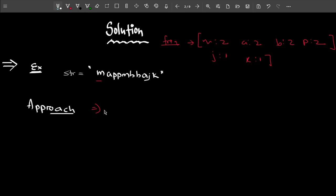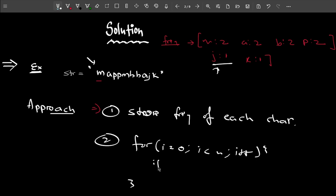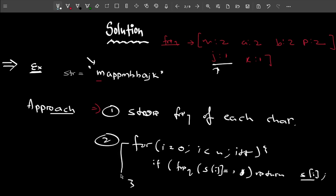The approach has two steps. Step one: store the frequency of each character. Step two: traverse the string and look for the first character with frequency one. I'll run a loop for i = 0, i < n, i++. The first character I encounter with frequency one is the first non-repeating character. I check if frequency[s[i]] == 1, and if so, return s[i]. If the loop completes without finding such a character, return a dollar sign.